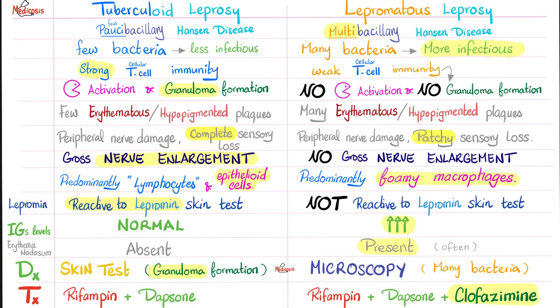Now let's talk about the disease. Tuberculoid leprosy: few erythematous or hypopigmented plaques — red or pale skin lesions. Versus lepromatous leprosy: many skin lesions — they could be plaques or macules. Tuberculoid leprosy will damage your peripheral nerves, causing complete sensory loss. But with lepromatous leprosy, it is patchy sensory loss. That's a big difference.